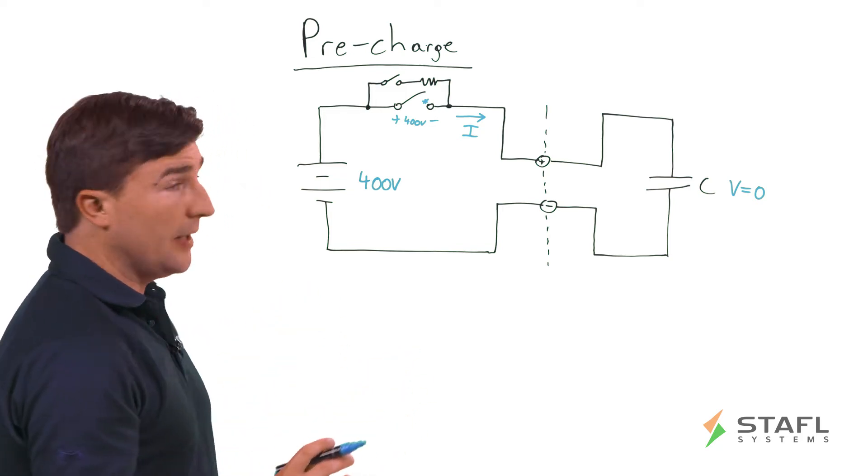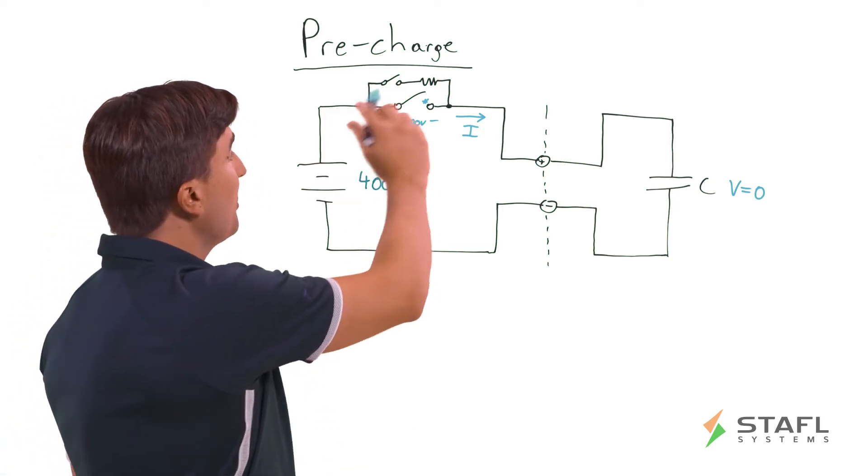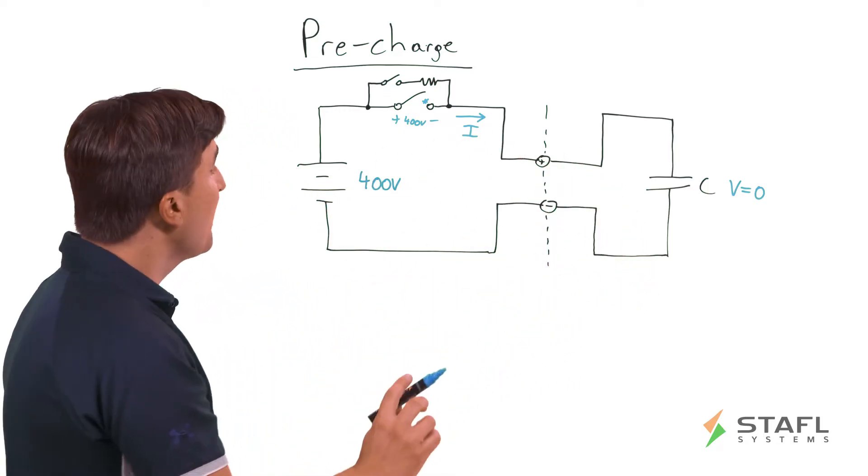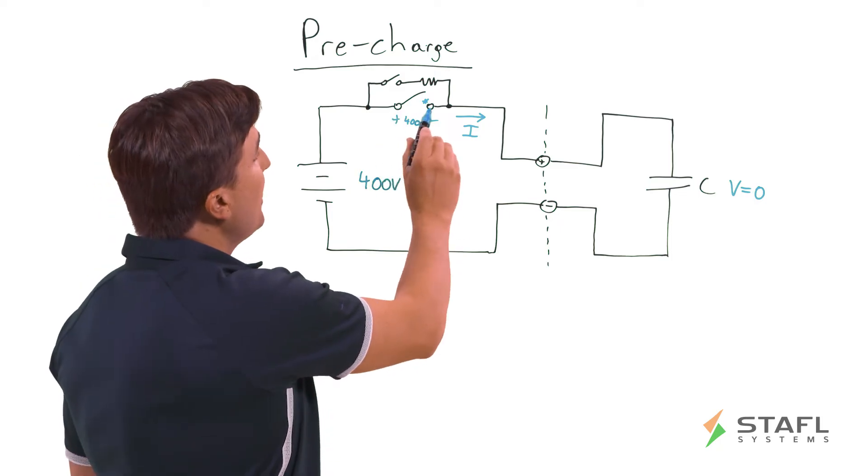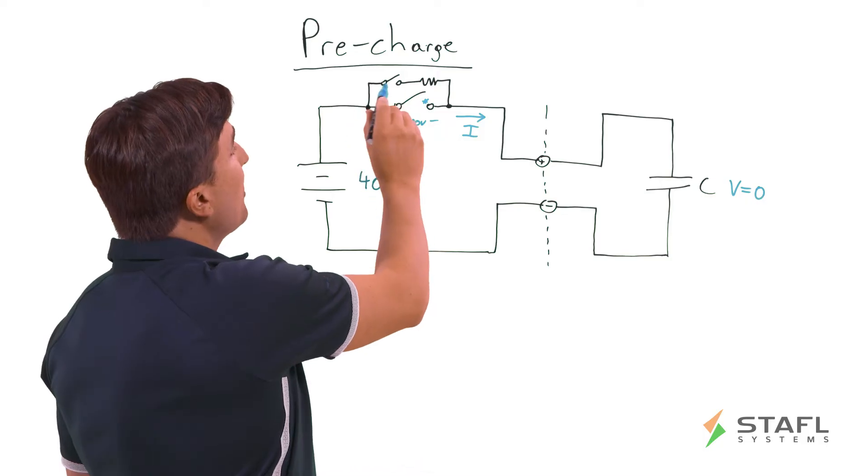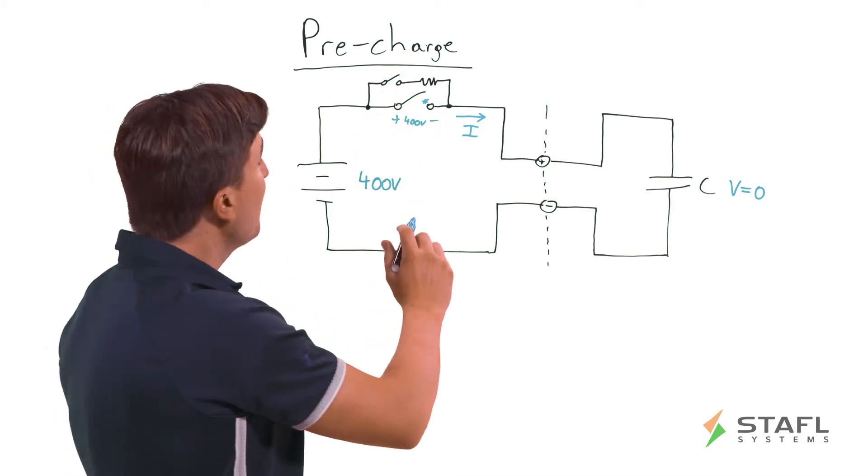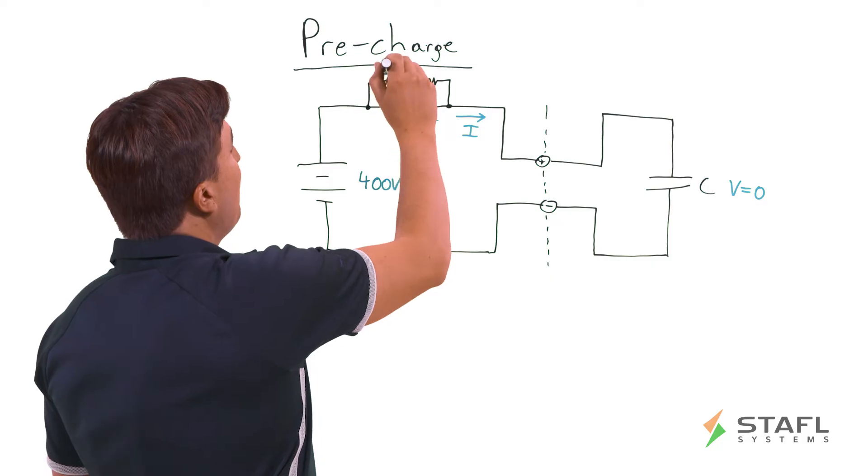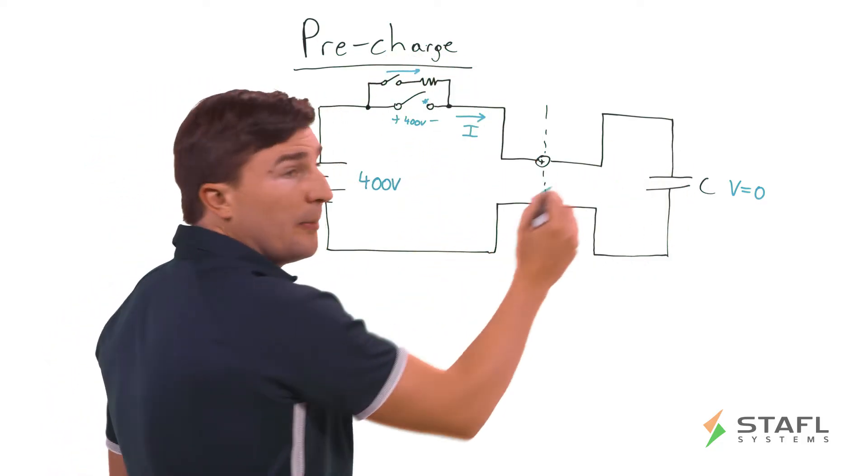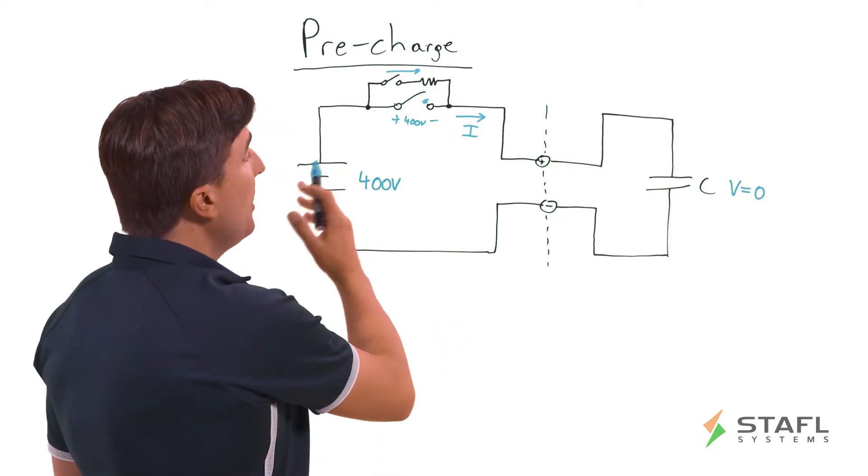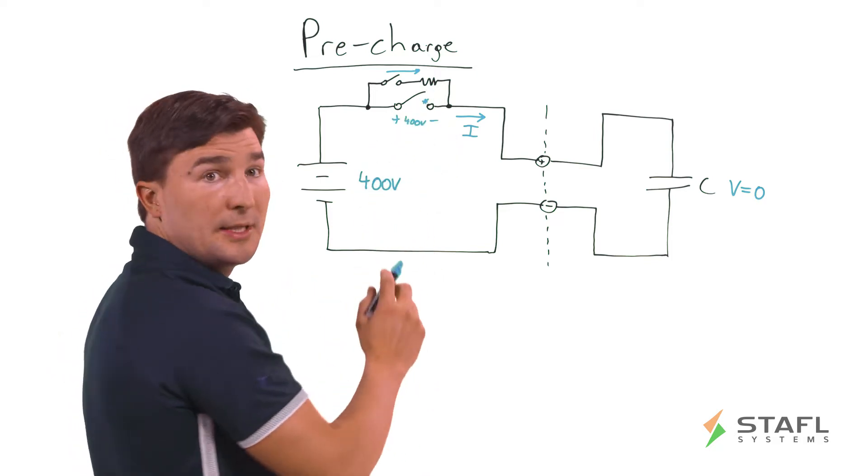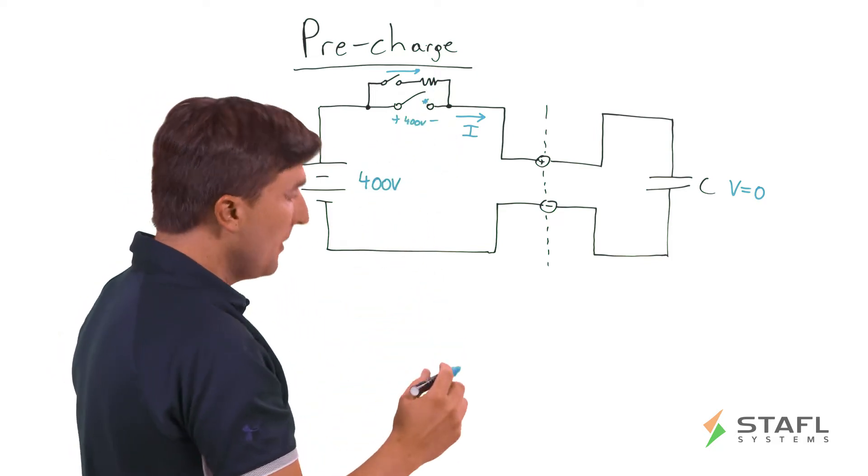So we want to avoid all that. And the pre-charge circuit is the best way to do that. So let's look at the alternative case, where now we have a pre-charge circuit that helps us avoid this inrush current. How does that work? Well, instead of just closing this main disconnect contactor right away, what we do is first close this pre-charge switch so that the current flow goes through the battery, across the switch, through the resistor, and then to the capacitor. So now, instead of having a very, very large amount of current flowing, our current is limited by the resistance of this resistor.